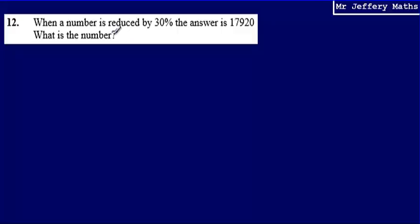So the first thing to do here is to think about this: we don't know what the amount was to start with, and from that amount that we don't know, 30% has been taken off and that is equal to 17,920.